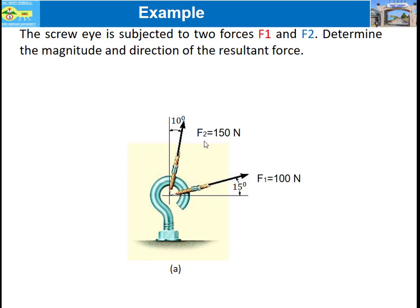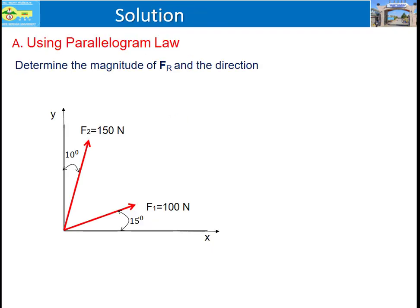When we say resultant, we mean that instead of representing two forces F1 and F2 separately, we can use a single resultant force with one direction angle theta. We can use the parallelogram rule to do this. The first step is to connect the two forces F1 and F2 tail to tail.